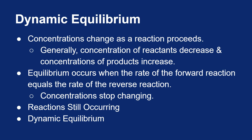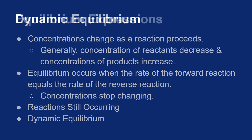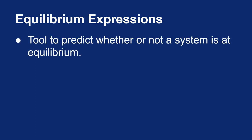The processes are still occurring, we just don't measure any differences. An important tool when working with these dynamic equilibria are called equilibrium expressions. We use these to predict whether a system is at equilibrium or not.